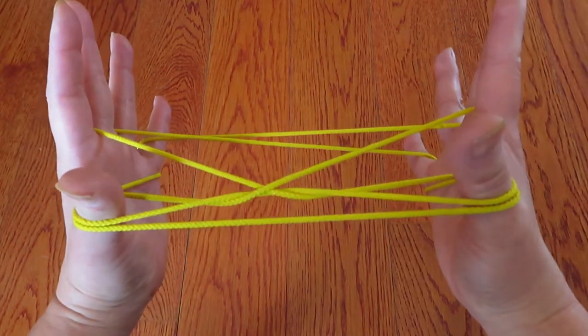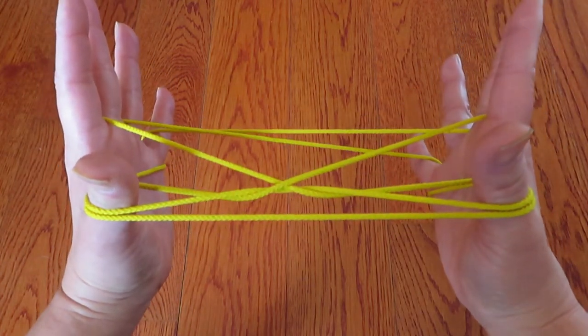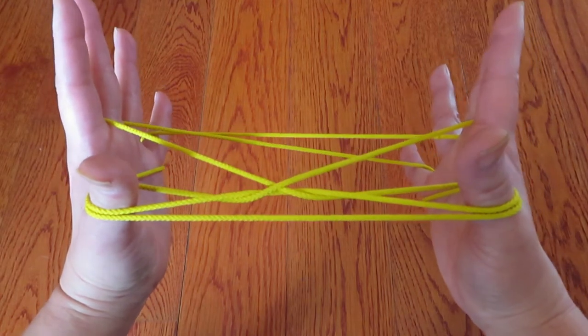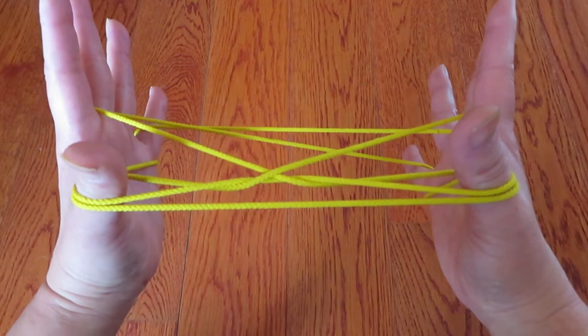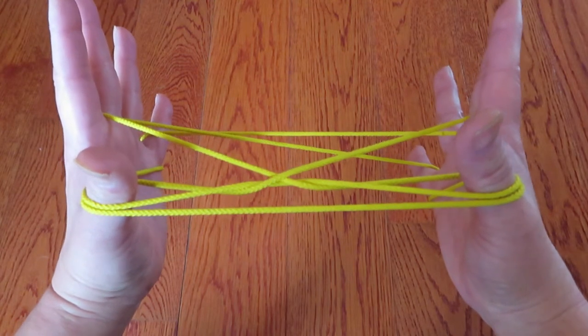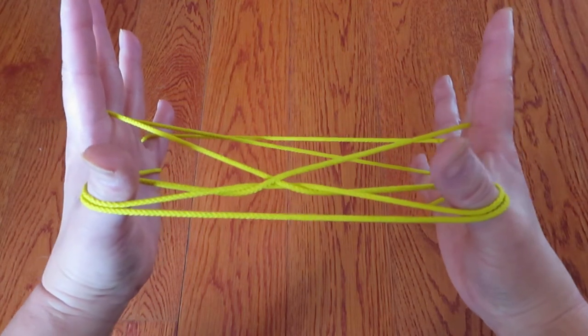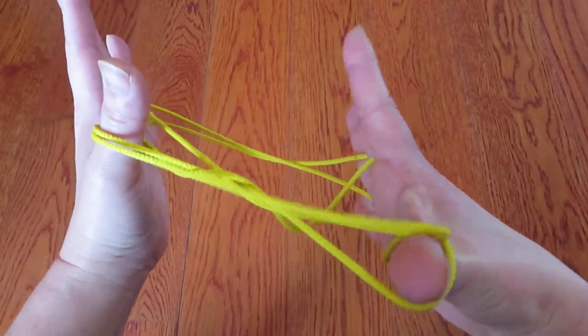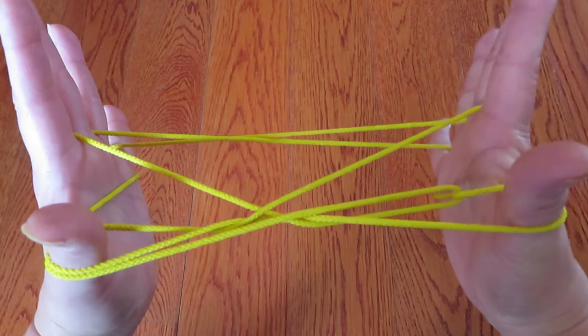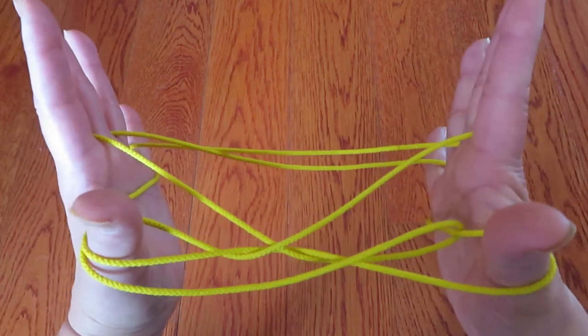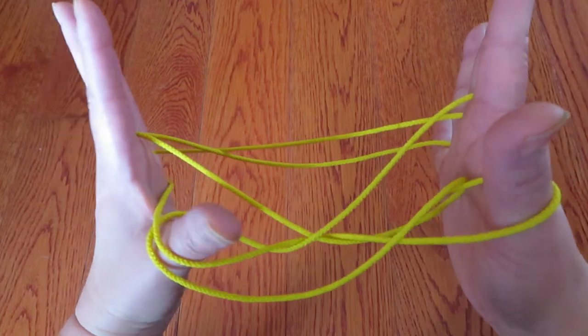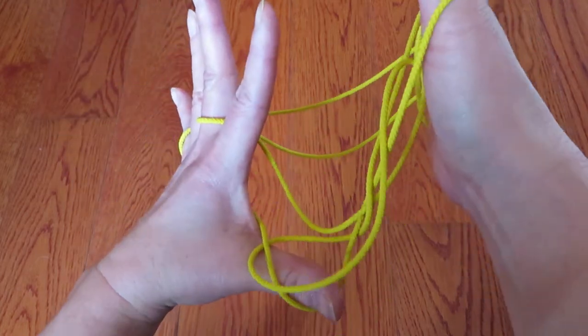Now if you see there is a horizontal string in front of both thumbs, there are two strings on each thumb and the bottom one. So keeping the top string around right hand thumb, go under the horizontal string and come back up. The same way with the left hand thumb, keep the top string and go under the horizontal string and bring it up again.